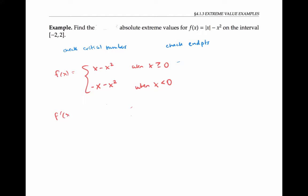Now to take the derivative, we can take the derivative of each piece. I'll just worry about when x is greater than zero and when x is less than zero — not at x equals zero, because there might be a cusp or corner there. When x is greater than zero, using the power rule I get one minus two x as the derivative. When x is less than zero, I get negative one minus two x.